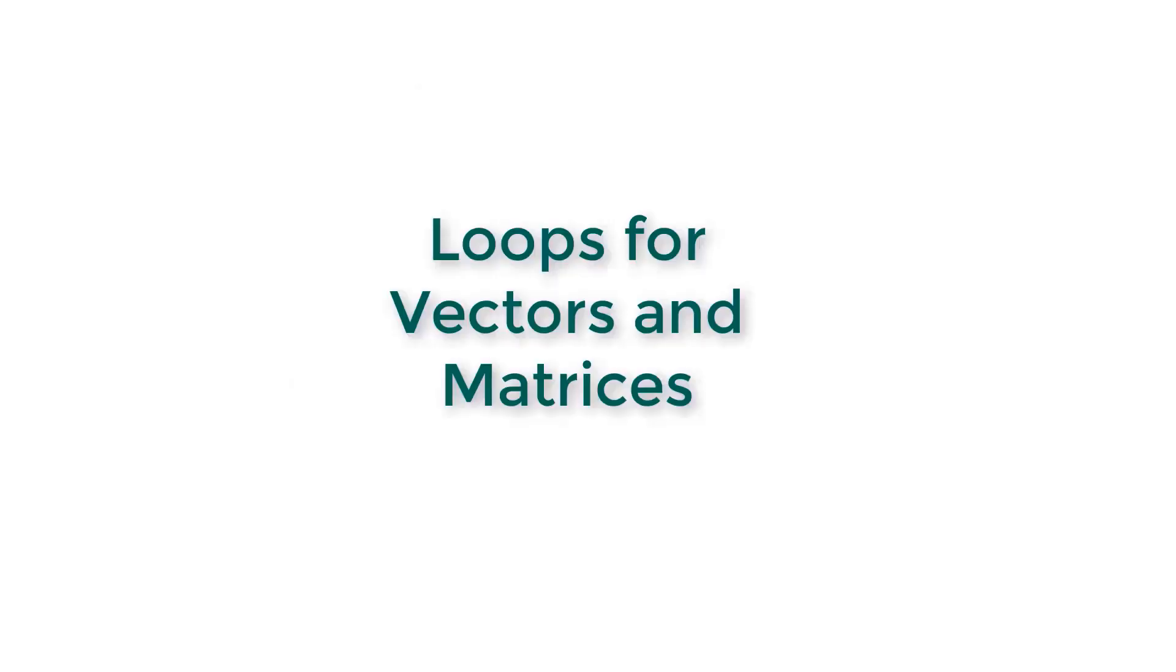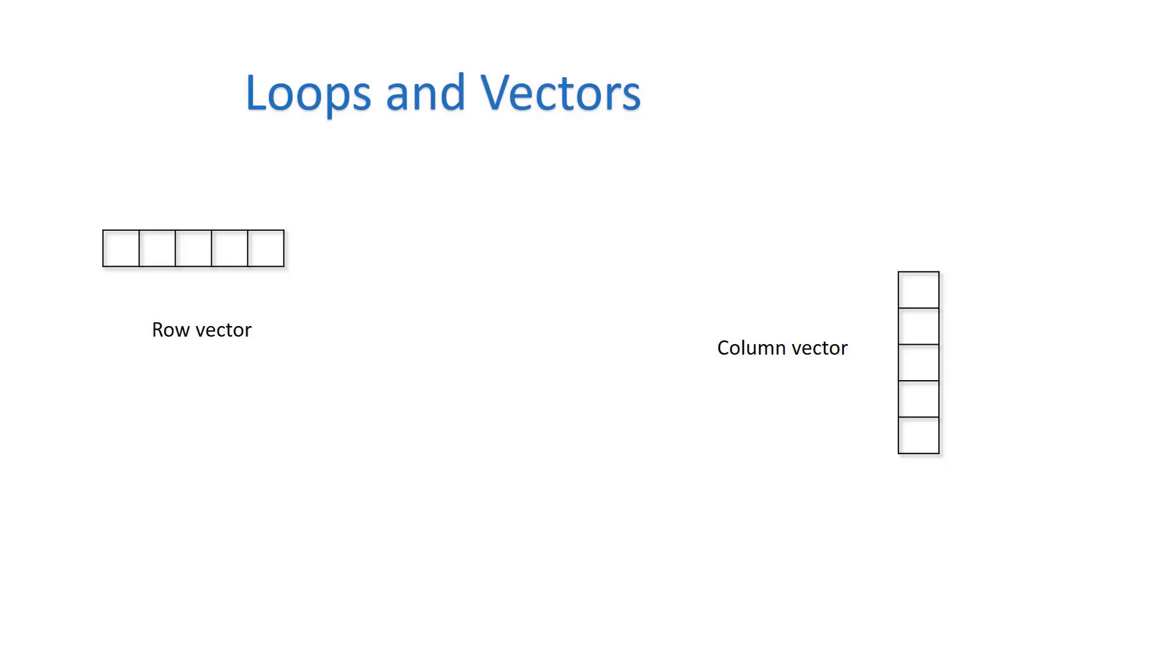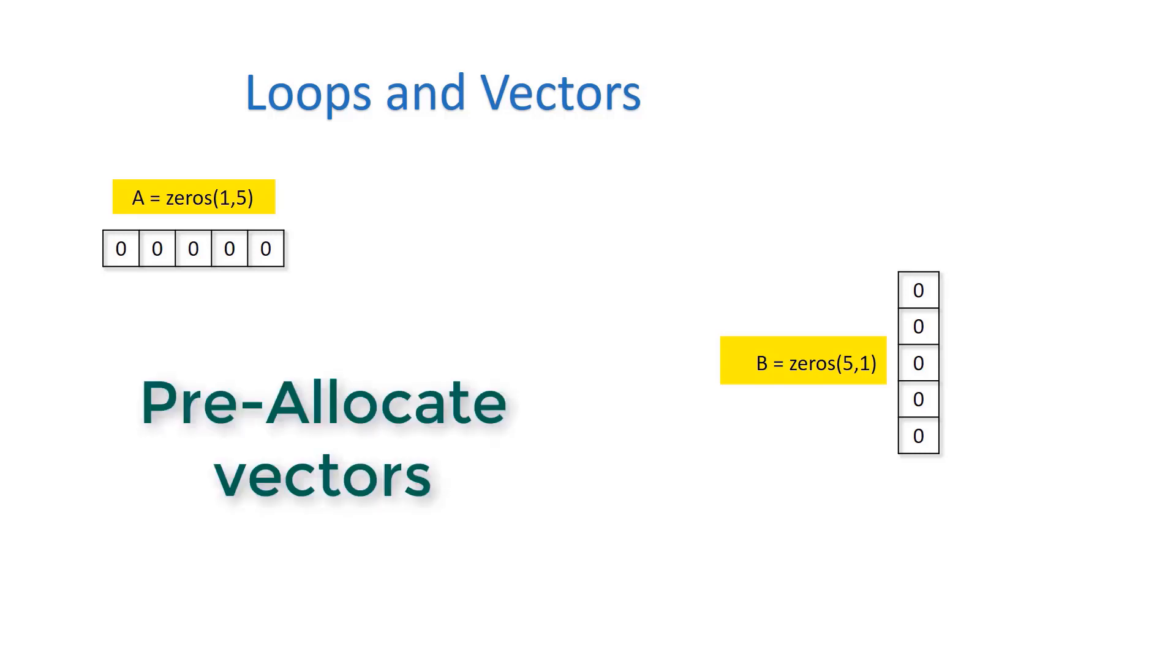Moving on to the context of vectors and matrices, we'll see how we can use loops to access individual elements in vectors. In this demonstration, I'm using a 1 by 5 row vector and a 5 by 1 column vector. Whenever you know the size of the vectors you're dealing with, it's better to pre-allocate them.